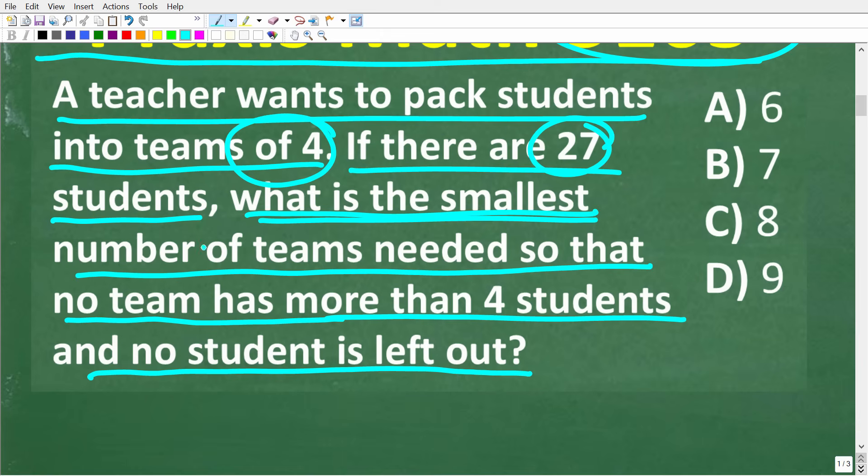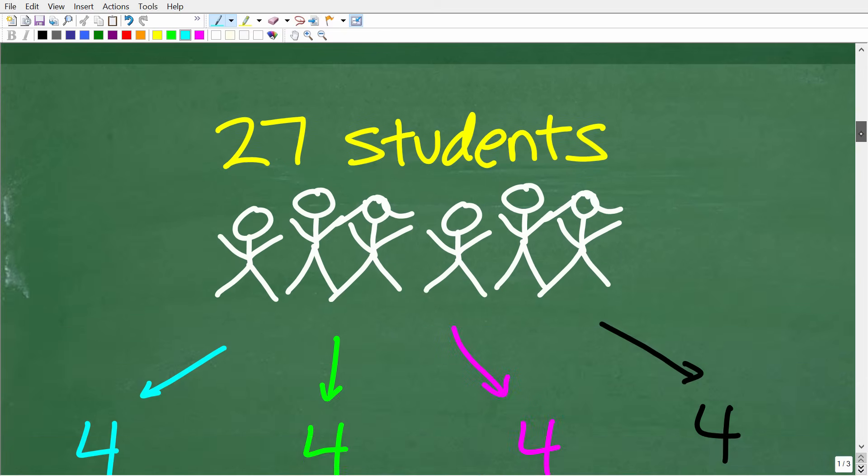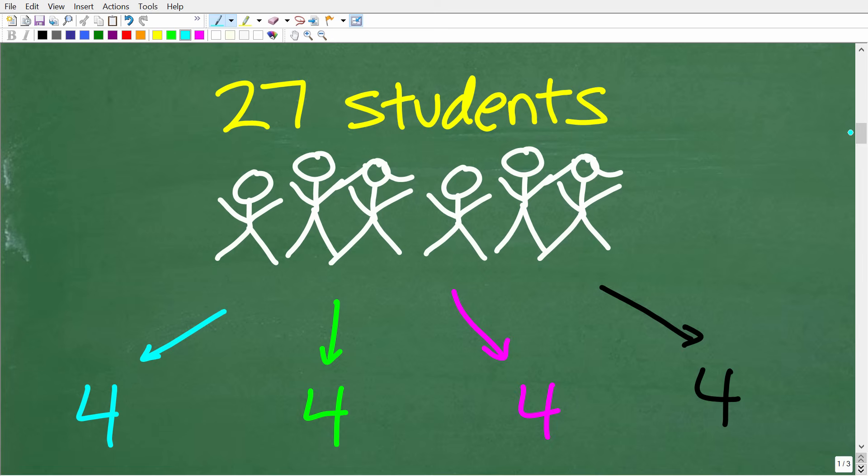So we need to figure out how many teams or what's the smallest number of teams we need so that no team has more than four students. So we have teams of four, not teams of five. Specifically teams of four. So we've got four here on one team, four here on another team, four here on another team, etc. And no student is left out. So we're talking about basic arithmetic. But again, you want to make sure you understand the problem. So 27 students and we have these teams of four.